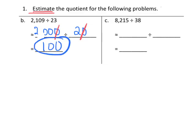For the next problem, problem C, 8,215 divided by 38. Again, I'm going to kind of stick with that, starting with that second number. That seems to be my theme today. I'm going to round that to 40. And then I'm going to think of this 8,215. What can I round that to so that it's a multiple of 4, or 40?